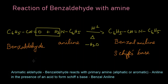To summarize: an aromatic aldehyde, that is benzaldehyde, reacts with a primary amine — it may be aliphatic or aromatic. Here we are reacting with an aromatic amine, that is aniline, in the presence of an acid to form Schiff's base, that is called benzal aniline. Thank you.